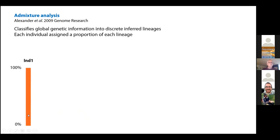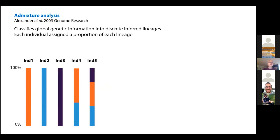Each individual is represented by a vertical bar, and these pile up next to each other when I have multiple individuals. The colors indicate different lineages — in this case, one individual from zero to a hundred is 100% one orange lineage. If I get another individual it might be designated with another color, meaning these two birds are basically unrelated, coming from different lineages.